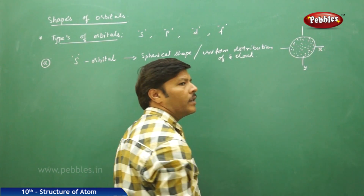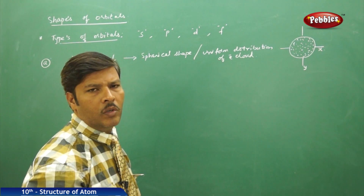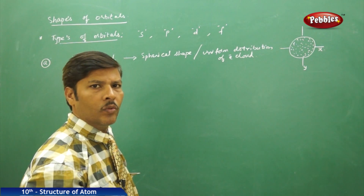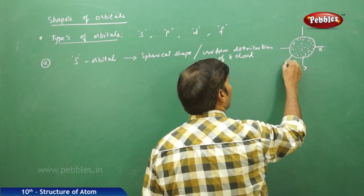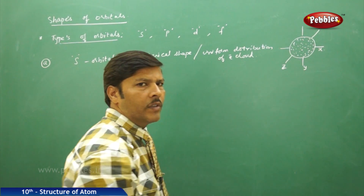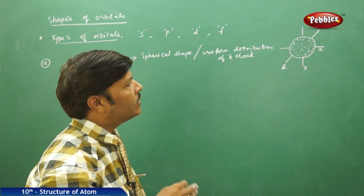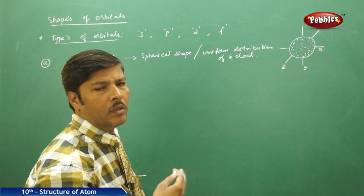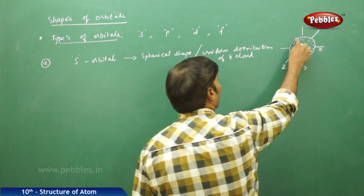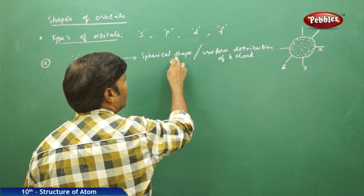In the x-axis, you find the same volume of electron cloud, the same volume in the y-axis, and the same volume even in the z-axis. Therefore, it is because of the uniform plane of symmetry. We cannot differentiate the s orbital as sx, sy, or sz because the electron density is distributed uniformly — that is why it is spherical in shape.